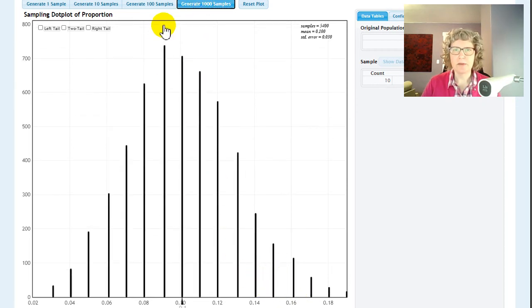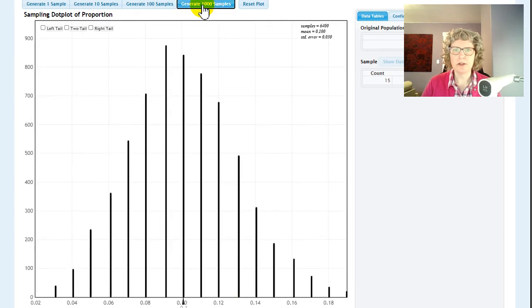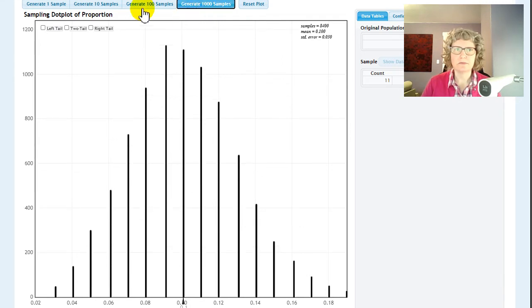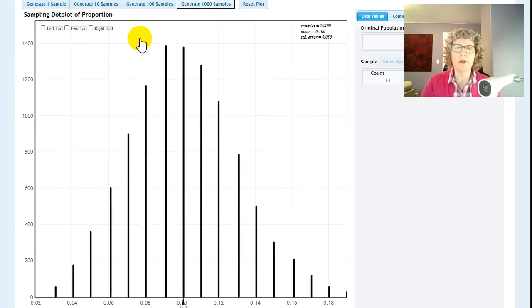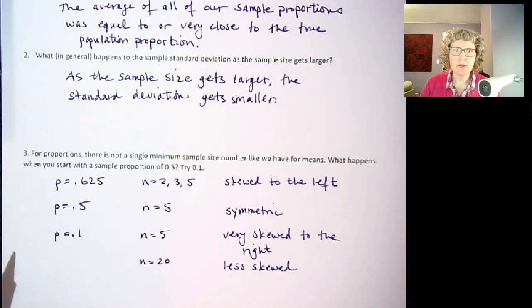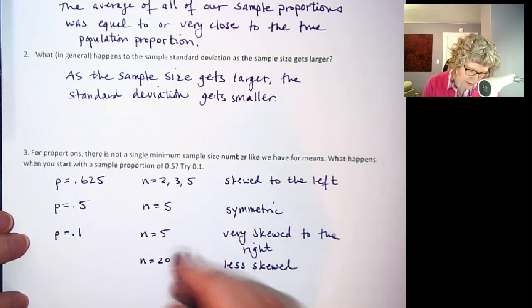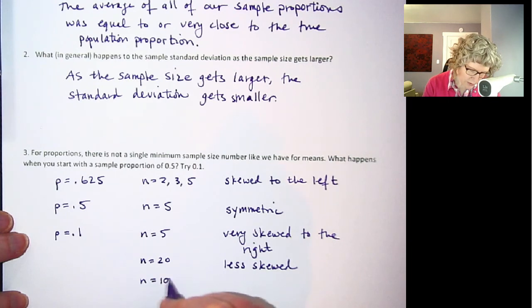Still looks like it might be slightly skewed. Oh no, it's getting a little better. Okay, so my point here is, for the sample size condition, the value depends on a combination of n and p. We can't just give a straight answer on this one. So when we did n equals 100, that looked symmetric or normal.